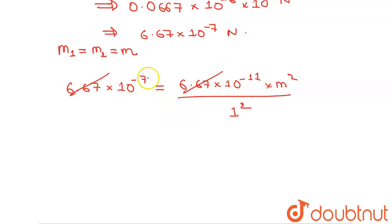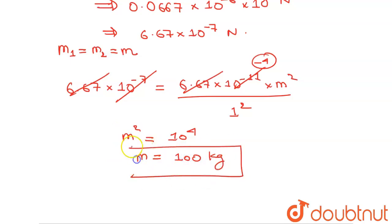These will get cancelled, minus 4 is remaining. Solving this, we will get m squared equals 10 to the power 4, so m equals 100 or 10 to the power 2. This will be our final answer.